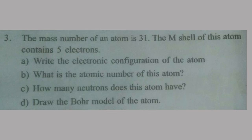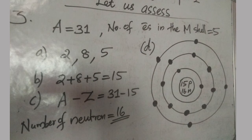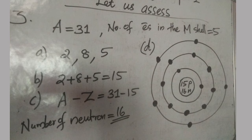The 3rd question: mass number is 31 and there are 5 electrons in the M shell. The electronic configuration is 2, 8, 5 — 2 electrons in the K shell, 8 in the L shell, and 5 in the M shell. That means the total electrons is 15, so the number of protons is also 15. Number of neutrons equals mass number minus atomic number: 31 minus 15 equals 16.